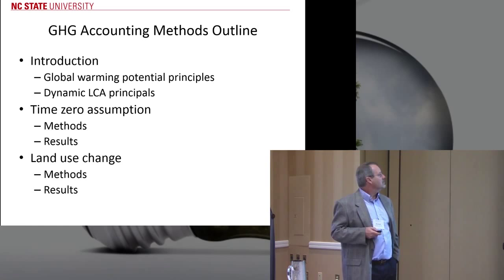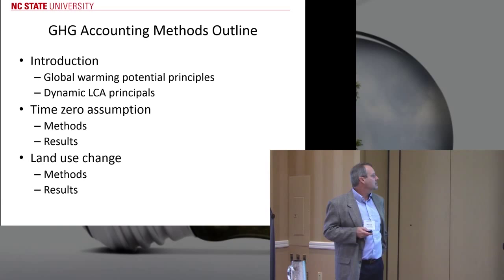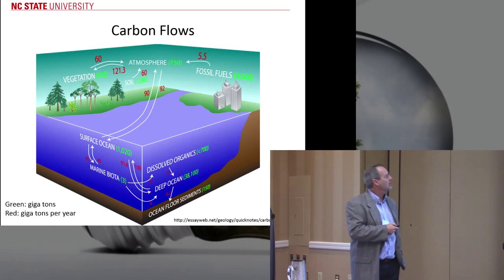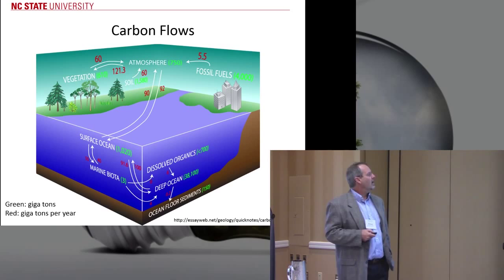So this is kind of an outline of my talk. We're going to talk a little bit about how we do dynamic global warming potential, then about the different time-zero assumptions for biofuels, and then briefly about land use change and how it might impact the overall picture. Many people might be familiar with the carbon flows in the atmosphere and how they might impact overall warming.